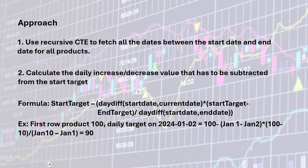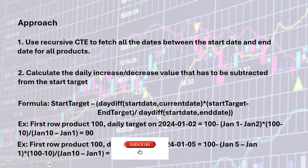For product 100, daily target on Jan 2nd: start target is 100, minus date difference between start date (Jan 1st) and current date (Jan 2nd), which is 1 day, multiplied by (100 minus 10 = 90), divided by date difference between Jan 1st and Jan 10th, which is 9 days. So 90 divided by 9 is 10, giving us 100 minus 1 times 10, which equals 90. So the daily target on Jan 2nd is 90.